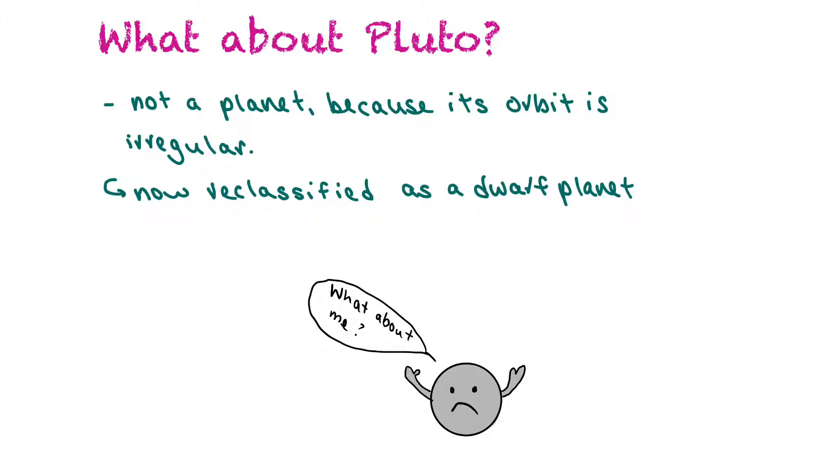Pluto lost its status as being a planet because its orbit is irregular and it is quite small too. Some asteroids are actually bigger than Pluto, so Pluto has now been reclassified as a dwarf planet.